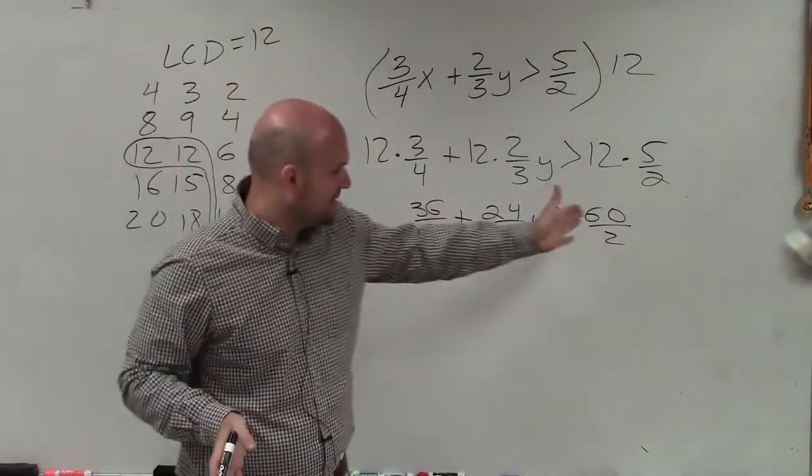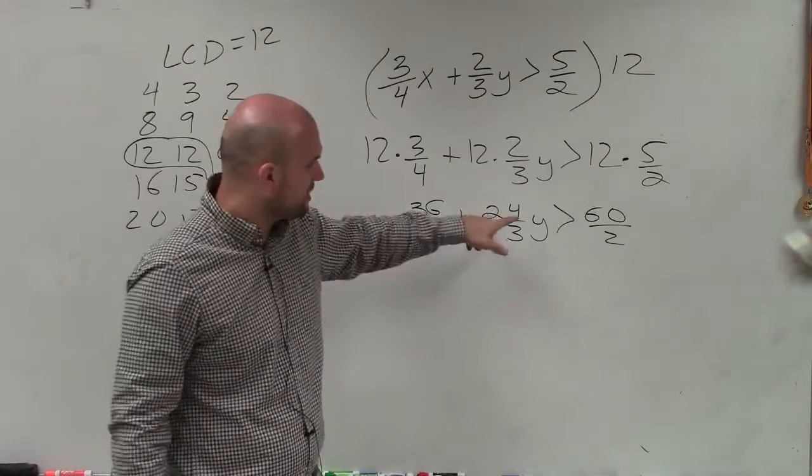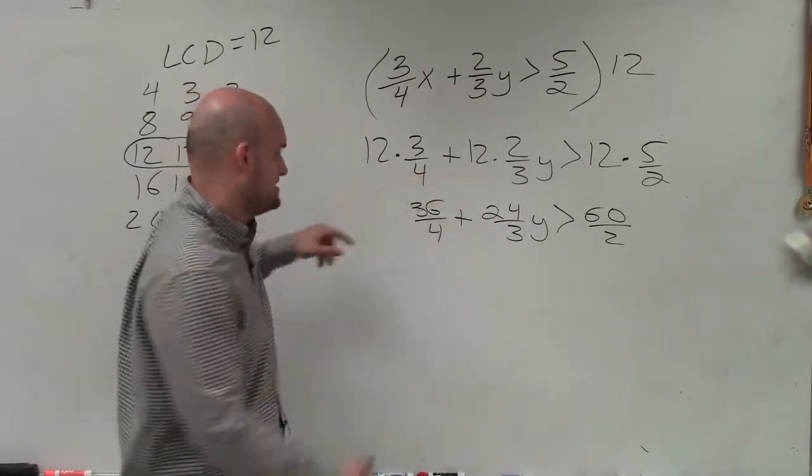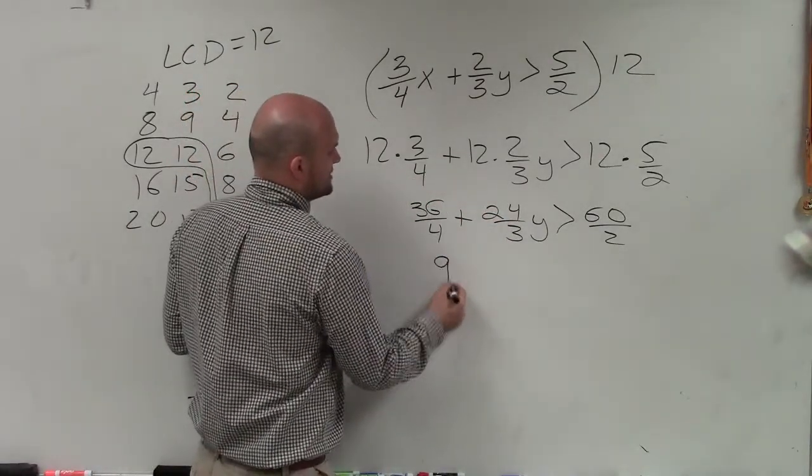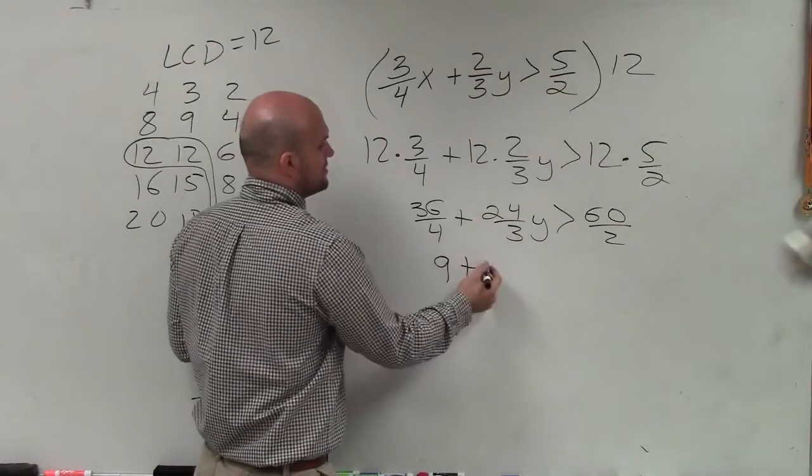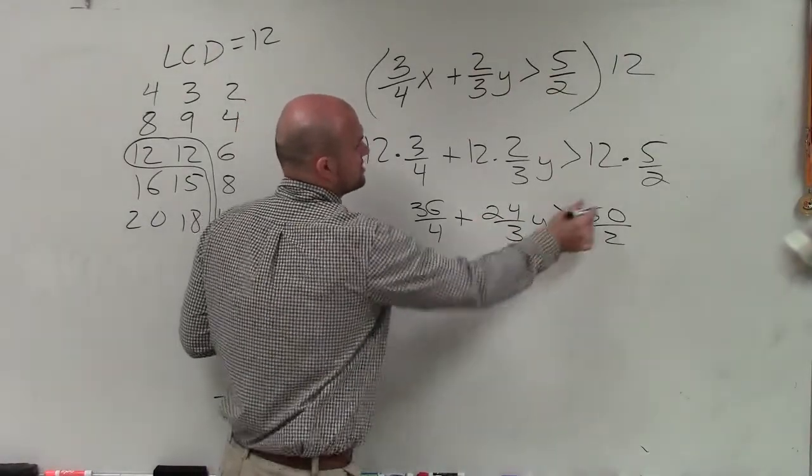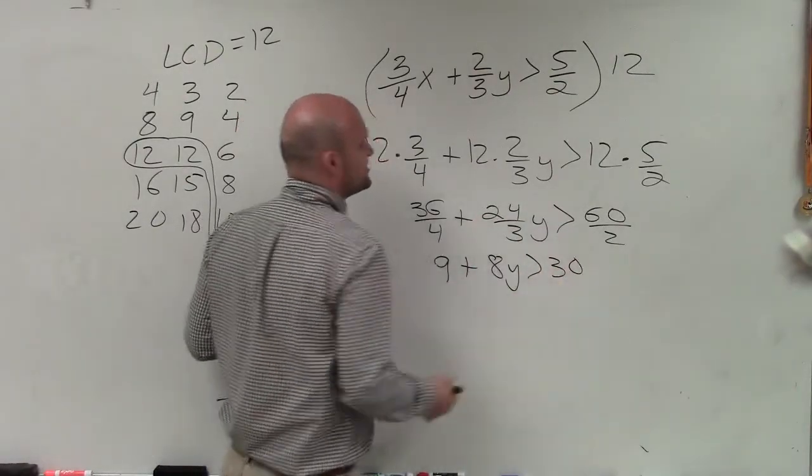So you could do it this way. And by multiplying by my LCD of every numerator, now I have a numerator that my denominator divides into. 4 divides into 36 nine times, 24 divides into 3 eight times, 60 divides into 2 thirty times.